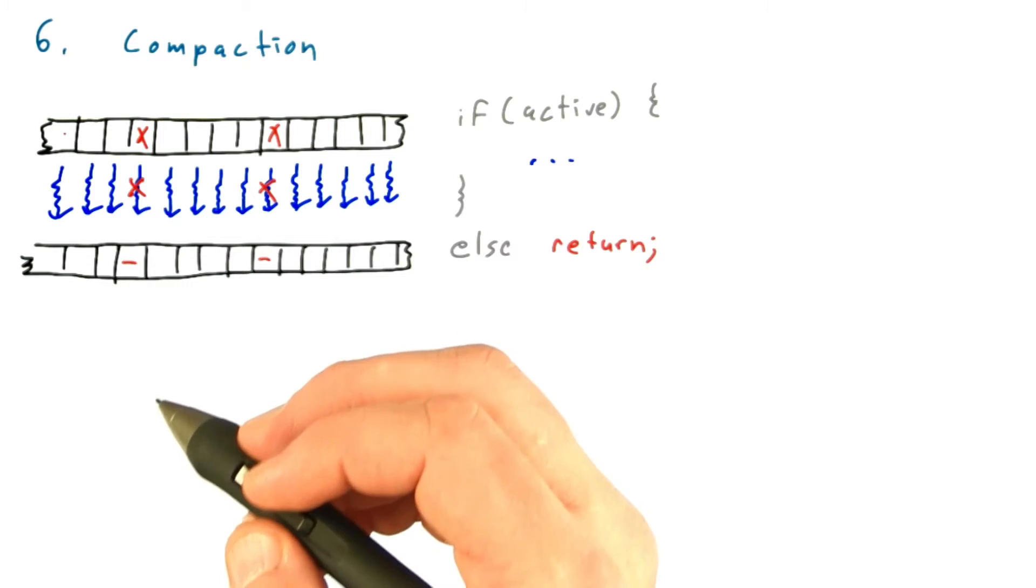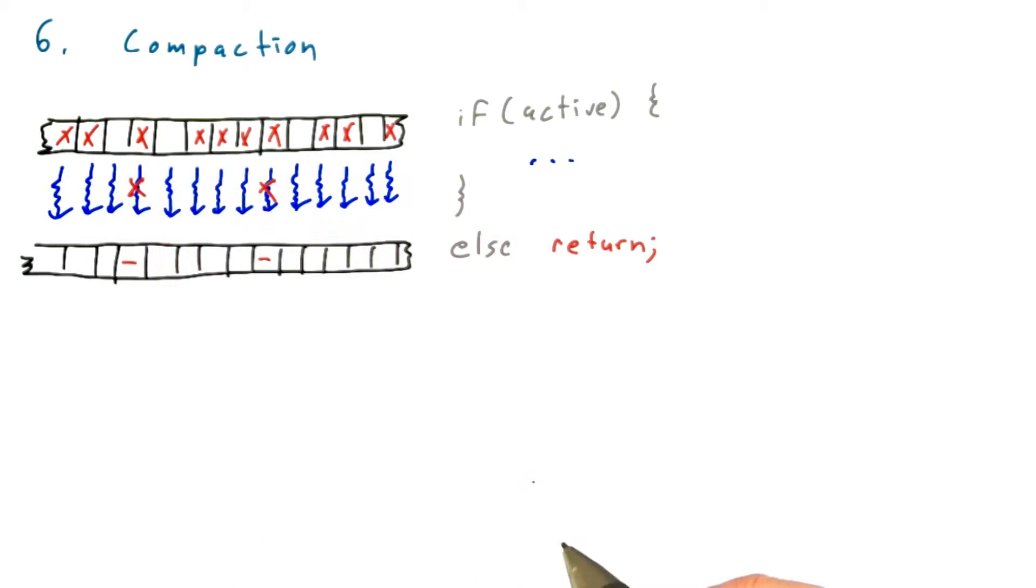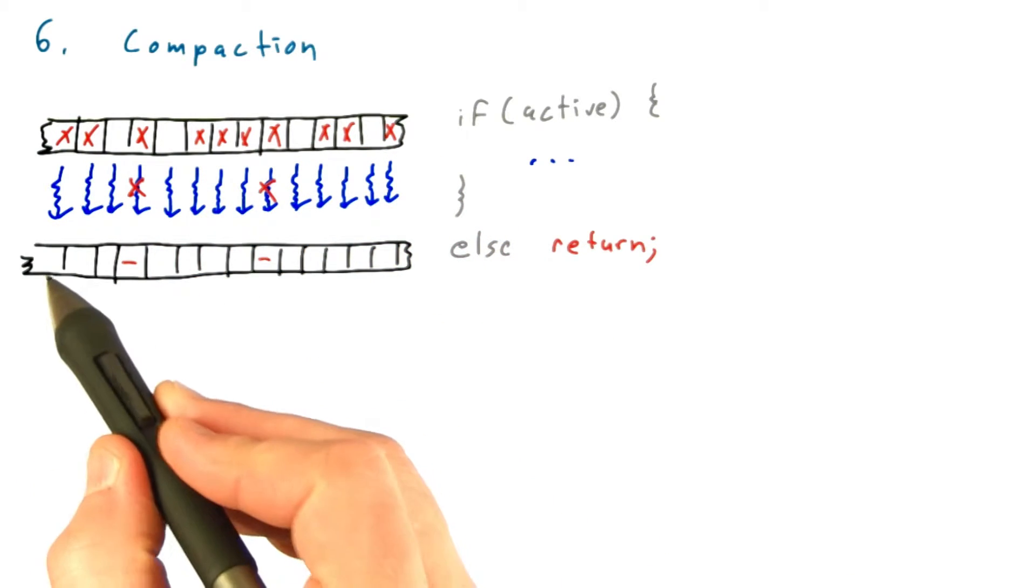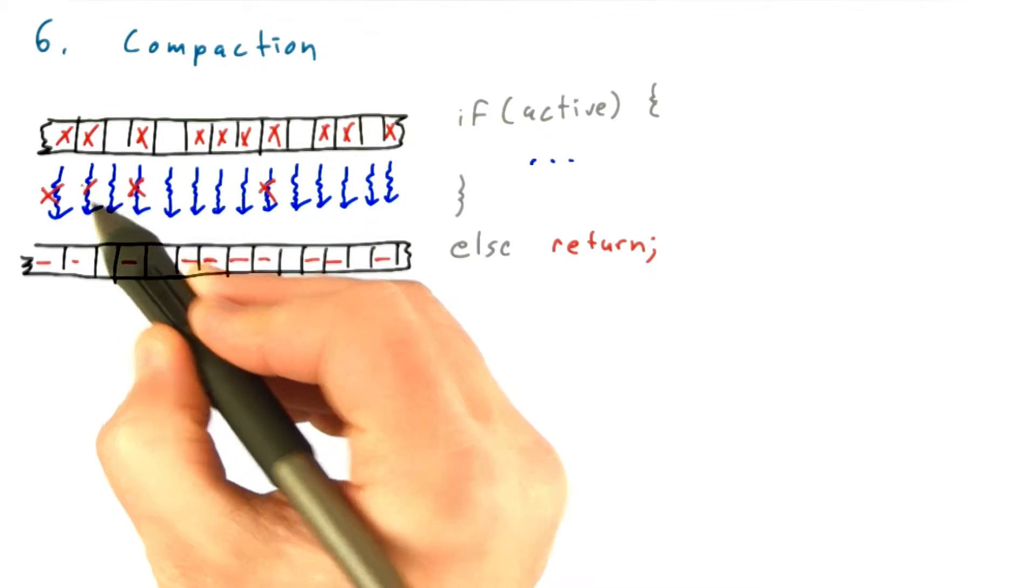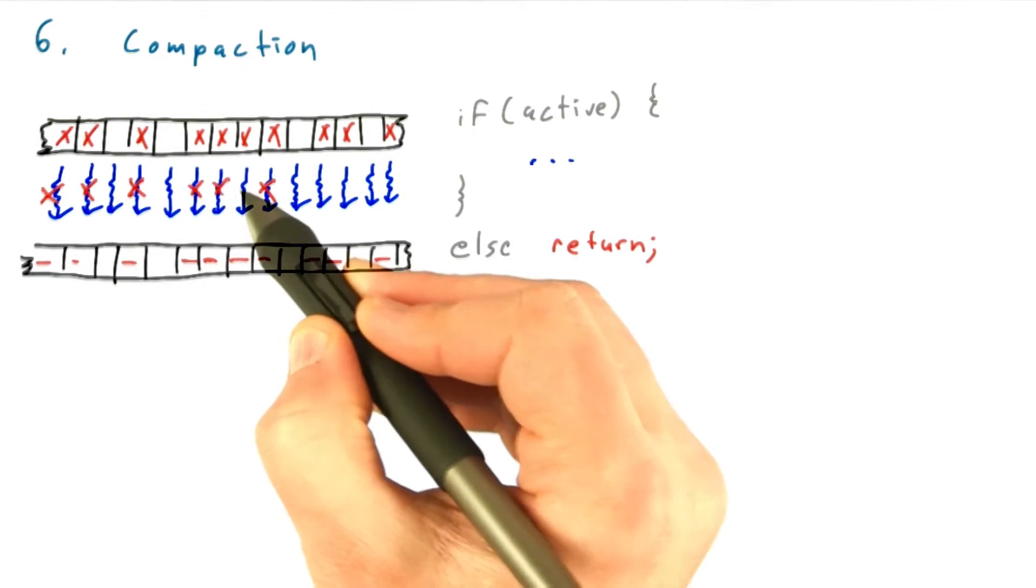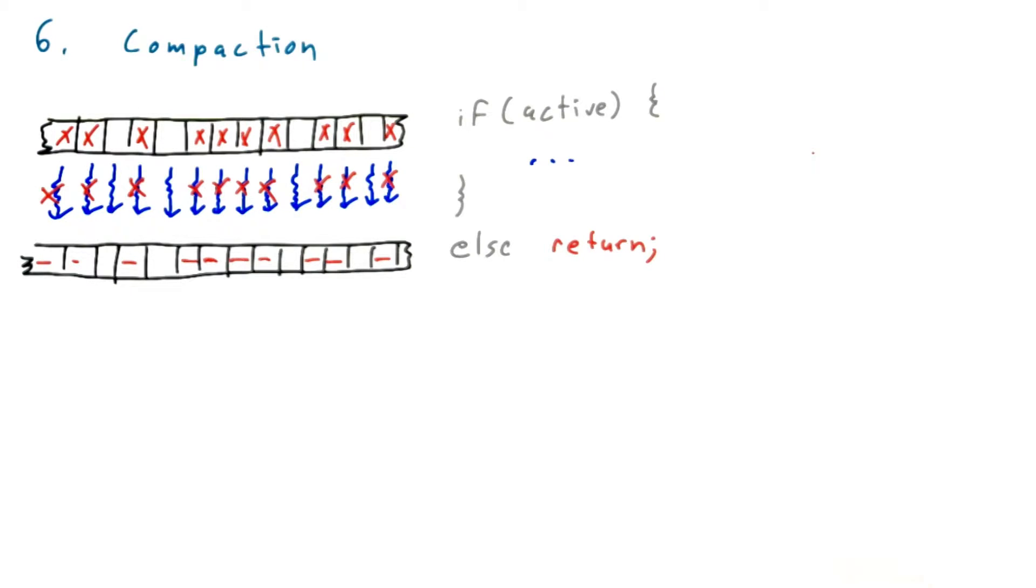Now, if relatively few elements require computation, then you're wasting a lot of storage on the output and doing less efficient computation because many threads are sitting idle instead of doing useful work.